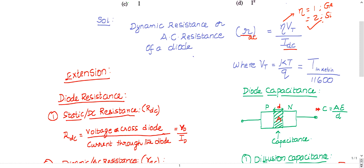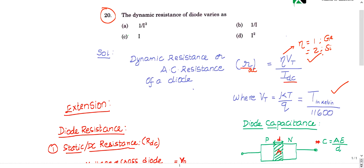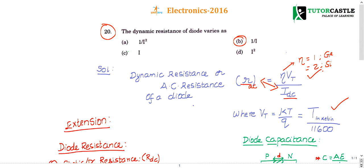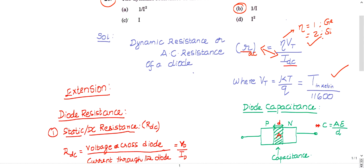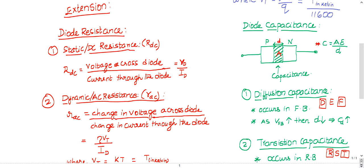Vt indicates kT/q, where k is the Boltzmann constant, T is the temperature in Kelvin, and q is the charge of the electron. On simplification, Vt equals T/11600. Since r and i are inversely proportional, the right choice is option B (1/i).